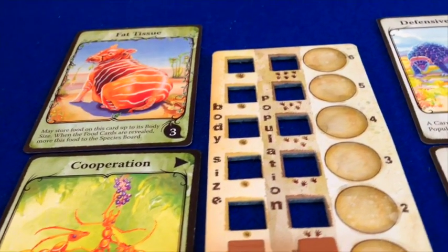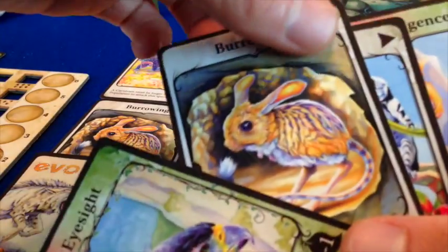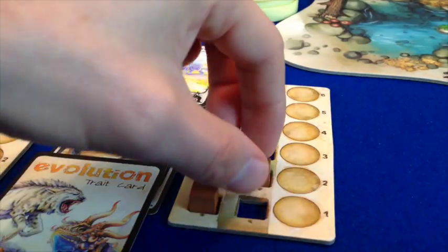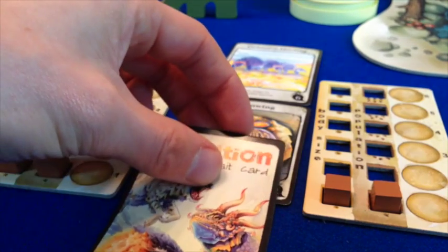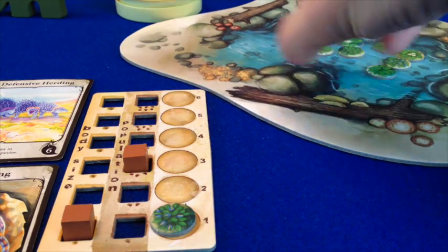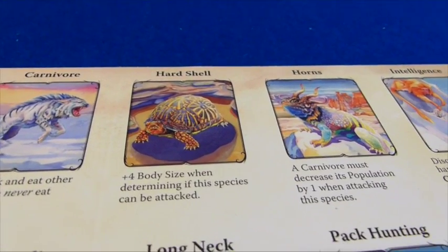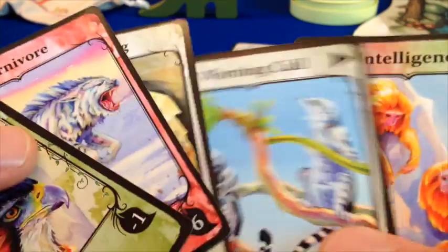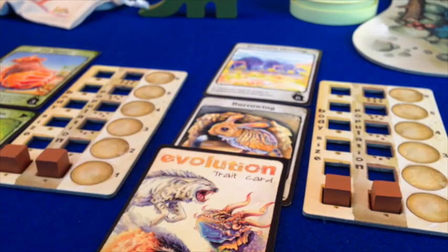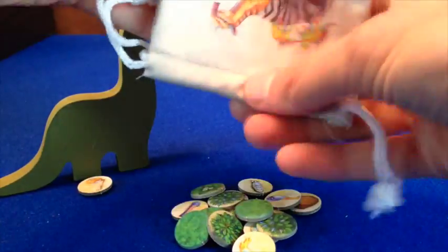In Evolution, each player develops a series of species throughout the game. On a player's turn they're given cards which can be used to create new species or increase the body size or population of an existing species, or to enhance the traits of one of their species. At the end of each round, species need to feed in order to survive, and food is often scarce. Added traits might allow a species to jump the queue for food at the watering hole, find food from another source, or turn carnivore and feed on the species of another player. Traits can also develop defences against carnivores — shells, camouflage, climbing, burrowing. At the end of the game, the player whose species ate the most food wins.